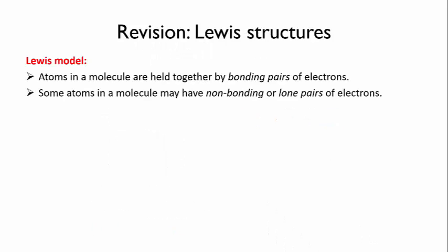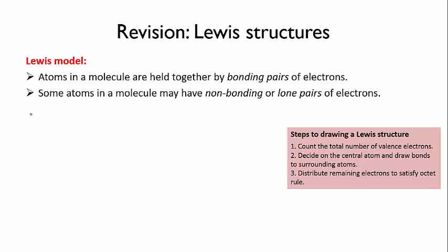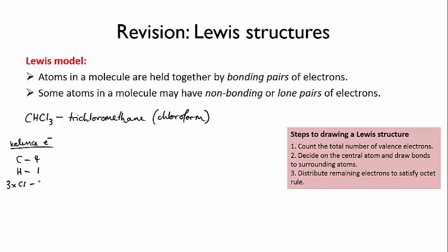So let's briefly go back and do a little Lewis structure revision. We're going to draw the Lewis structure for CHCl3, which is called trichloromethane, or used to be known as chloroform. So first we've got to total up the valence electrons: four for carbon, one for hydrogen, three times seven for the three chlorines. That gives us a total of 26.